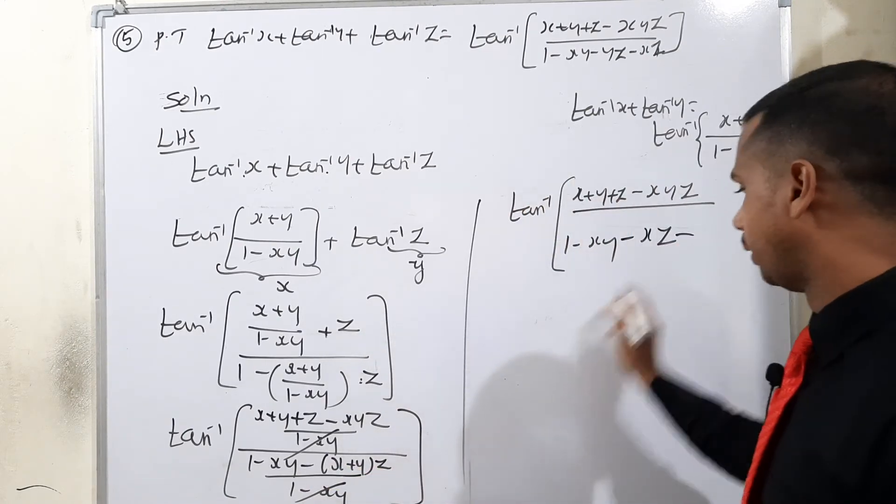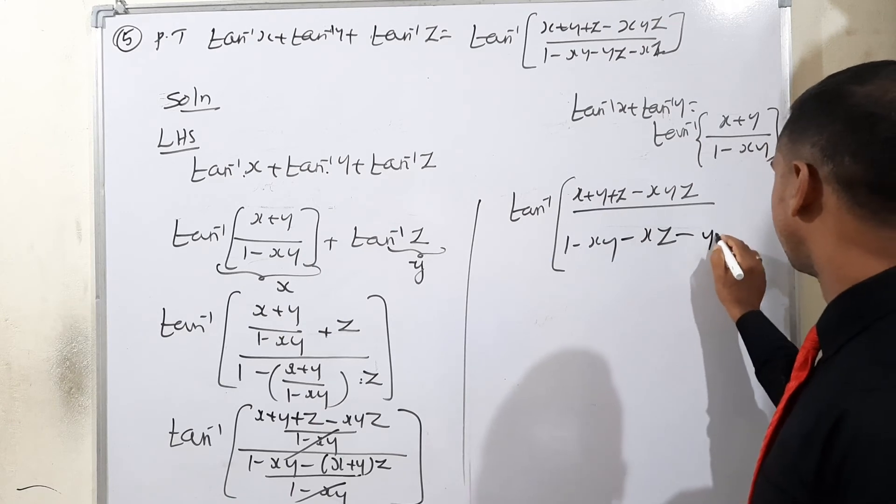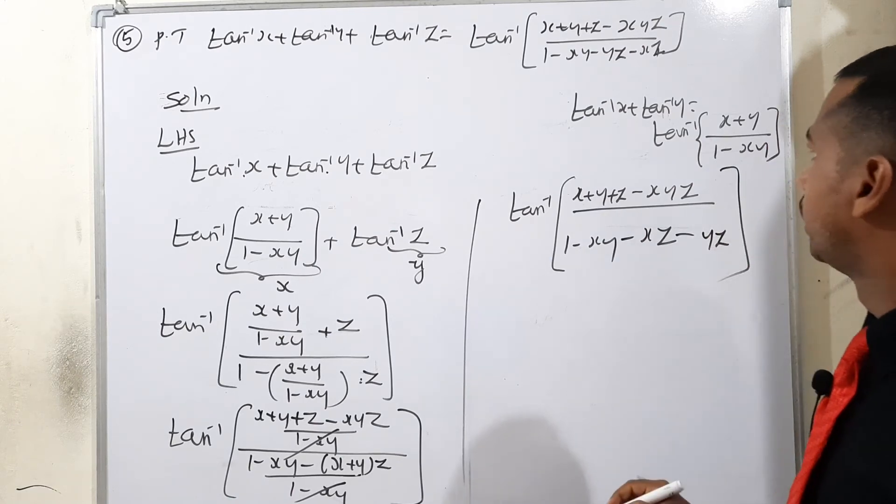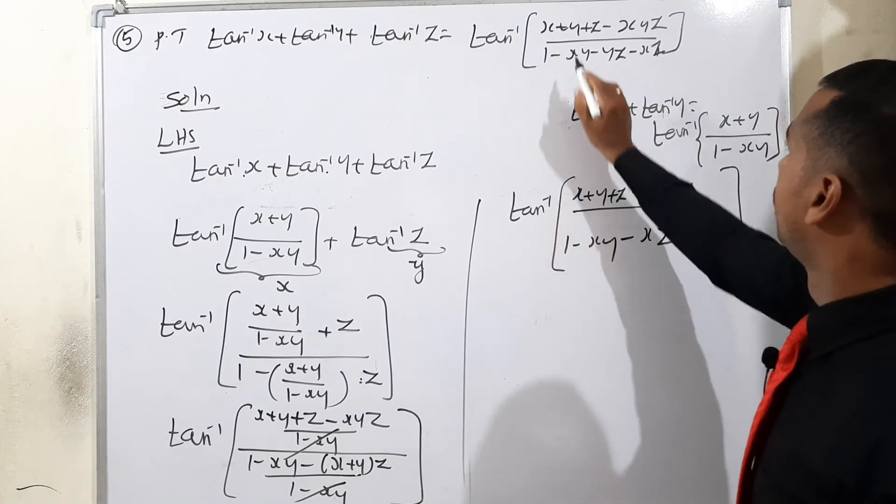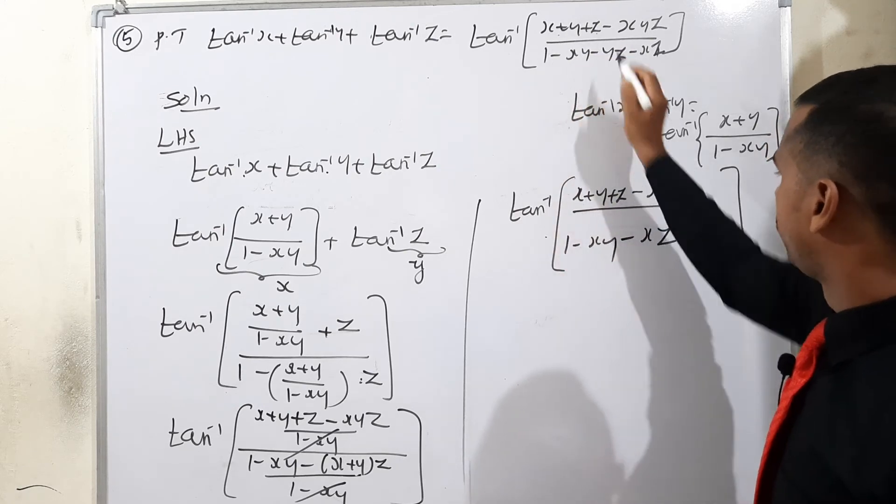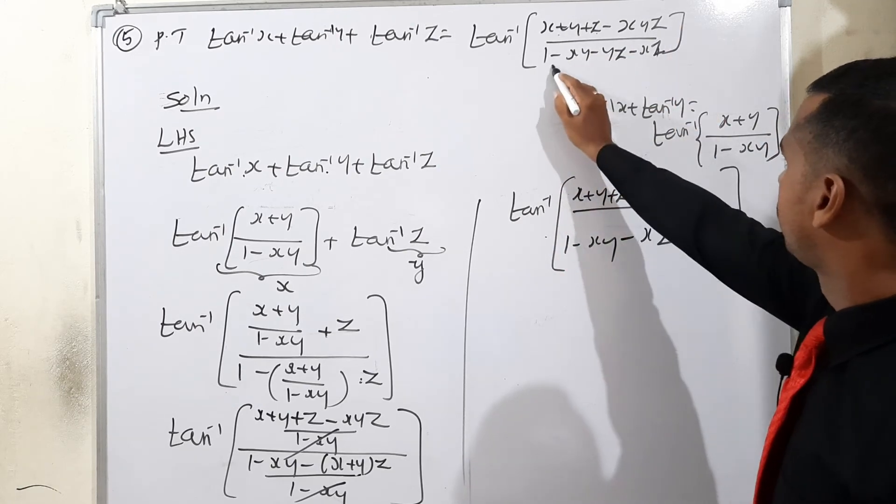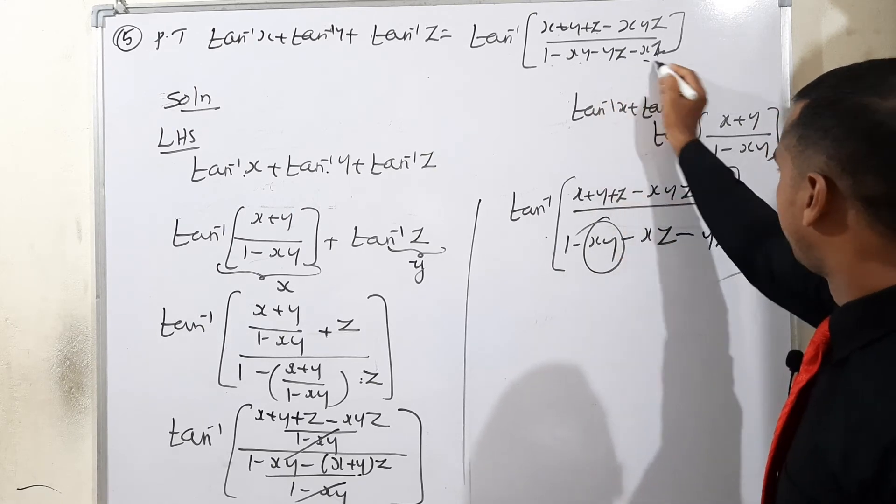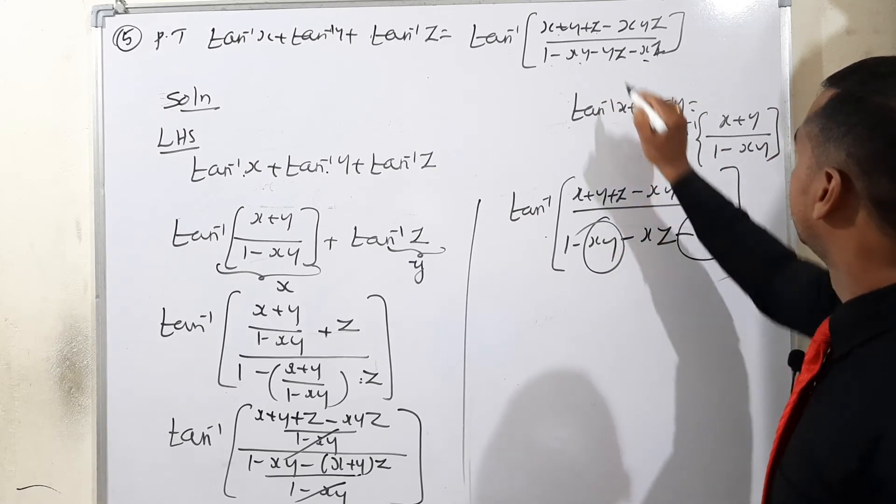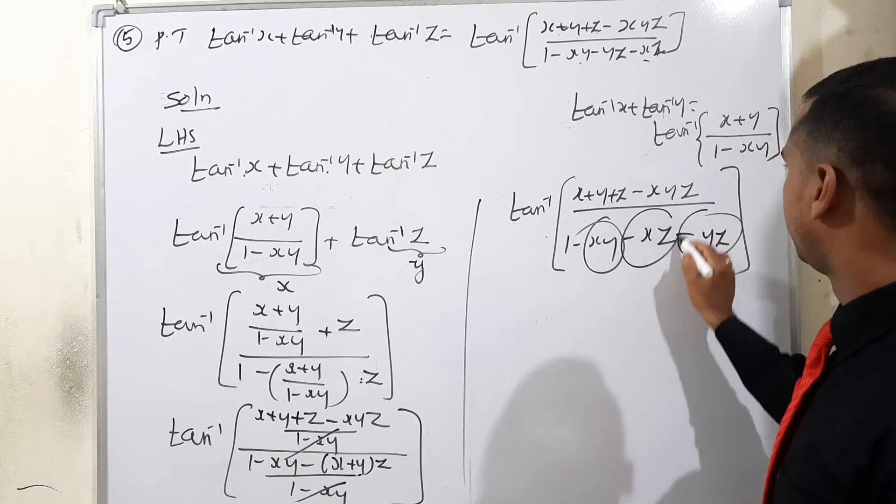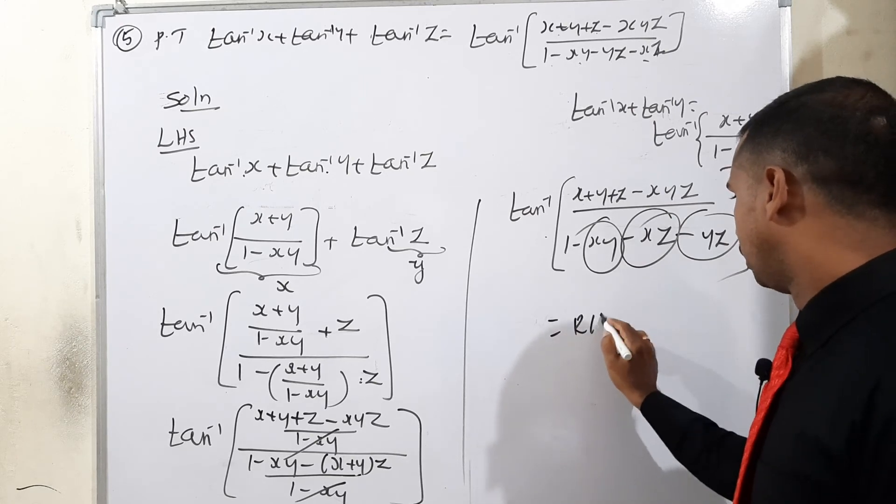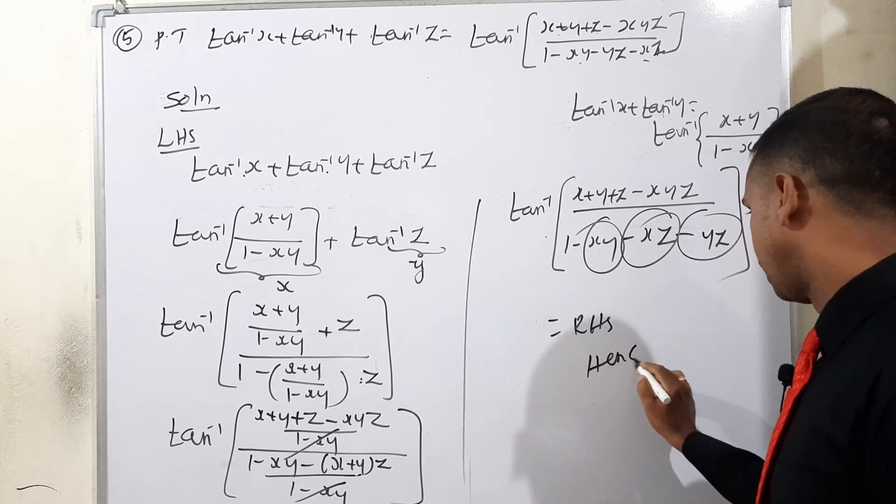We can check our RHS: tan inverse x plus y plus z minus, denominator 1 minus xy is there, 1 minus xy minus yz minus yz, then minus xz minus xz. This is called RHS. So we can write hence proved.